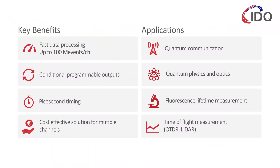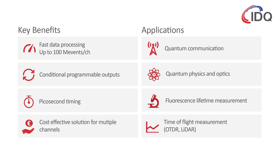The ID900 Time Controller has found application in quantum communication thanks to its four fast input channels which can take up to 100 million events per second each and can avoid the need to transfer and store large amounts of data to the computer. Moreover, the unique ability to generate conditional outputs is also essential for quantum communication and quantum physics and optics setups.